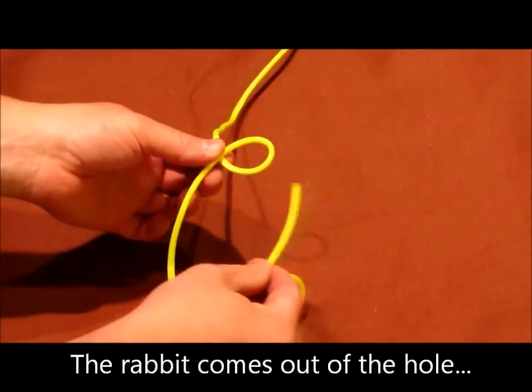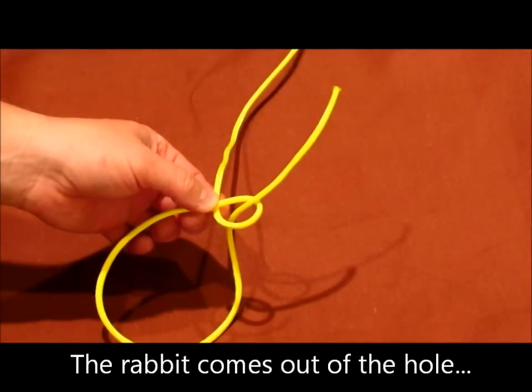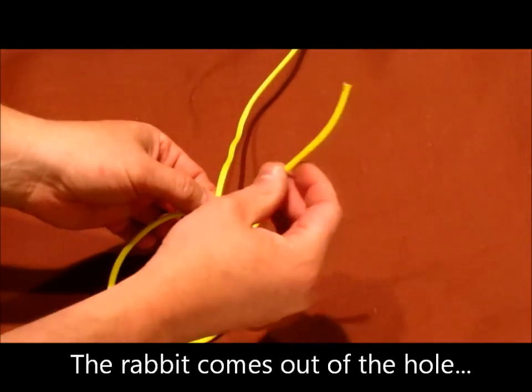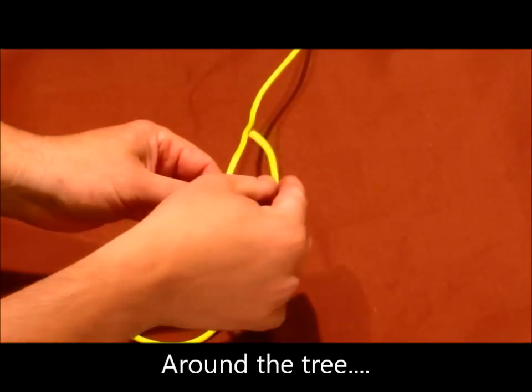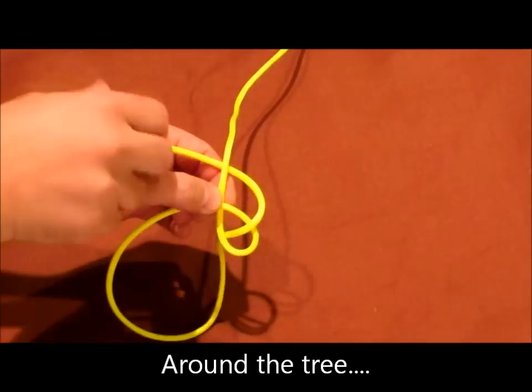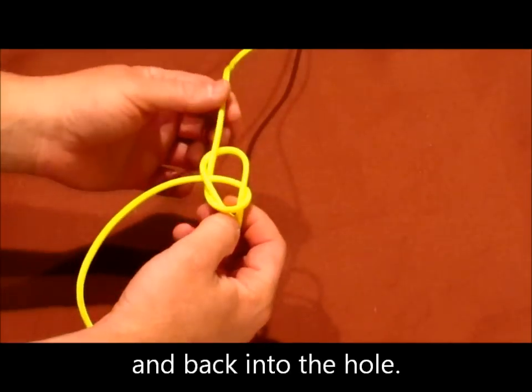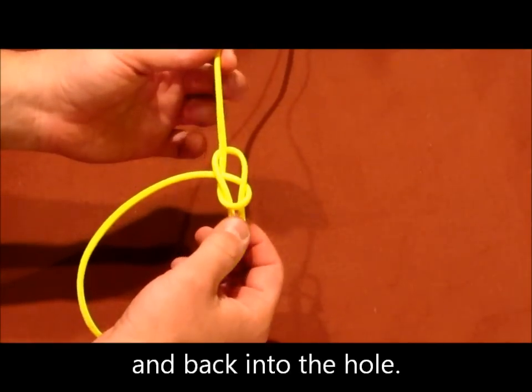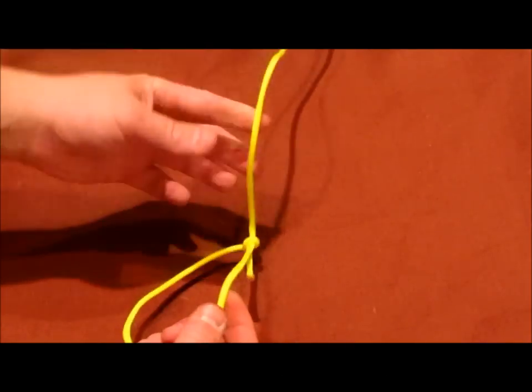I'm going to take our line, put up through our loop, just like so. We're going to take this end behind the standing rope, and it's going to follow right back down through our little hole that we made, our little loop. And we're going to tighten that up. And that is the bowline.